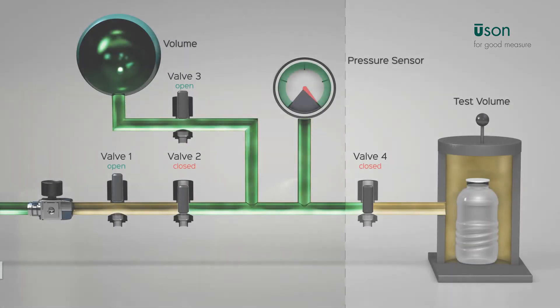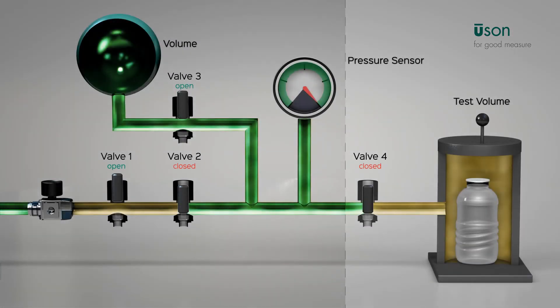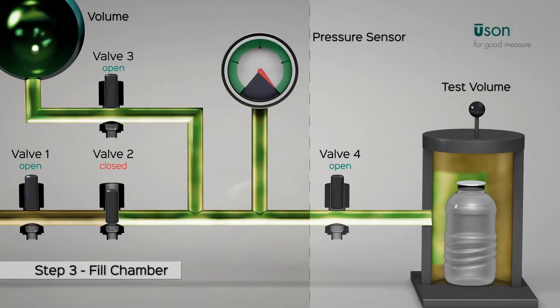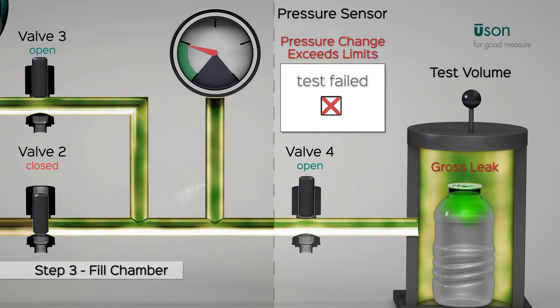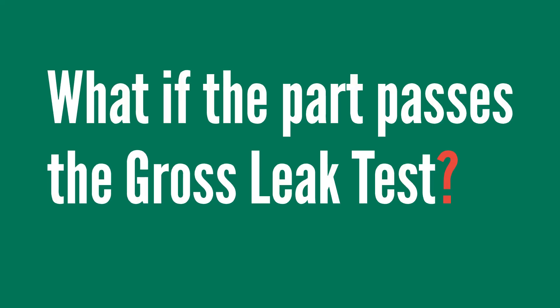If there's a drop in pressure during the measure step that is below acceptable limits, this means the test part is filling with air and there's a gross leak. But what happens if the part passes a gross leak test? You might think this means we have a good part — not necessarily.